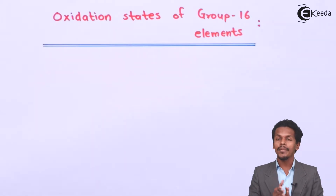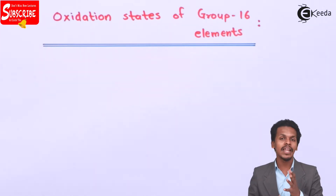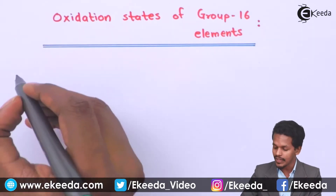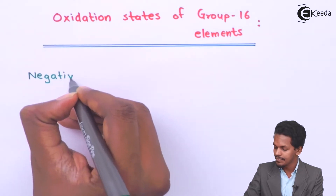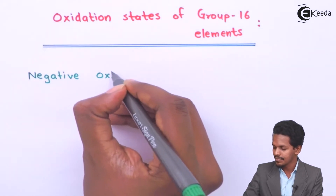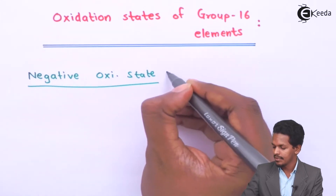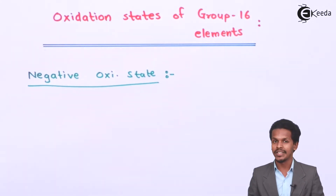In this topic I am going to talk about the oxidation states of group 16 elements. We see that group 16 elements have two types of oxidation states — the first one is the negative oxidation state and the second is the positive oxidation state. Now let me talk about the negative oxidation state first.